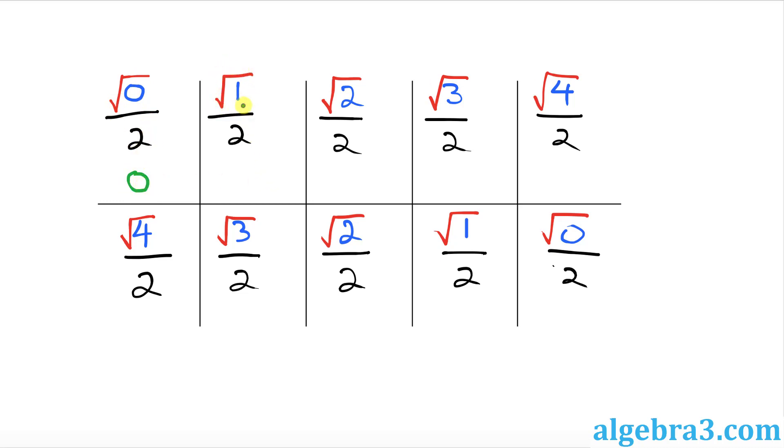Over here on the top, square root of 1 is 1, so this becomes 1 over 2. We can't really simplify this one. Leave it as square root of 2 over 2. Likewise, leave this one as square root of 3 over 2.